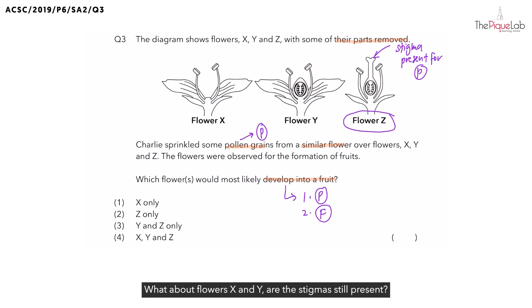What about flowers X and Y? Are the stigmas still present? No. In fact, they have no stigmas for pollination to occur. So, is it possible for flower X and Y to develop to become a fruit? No.